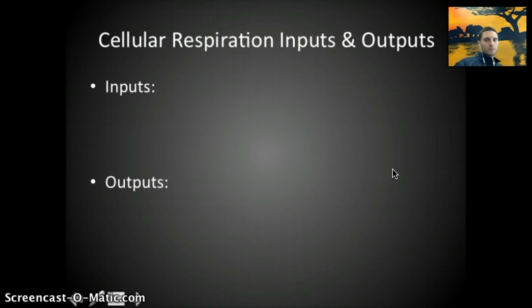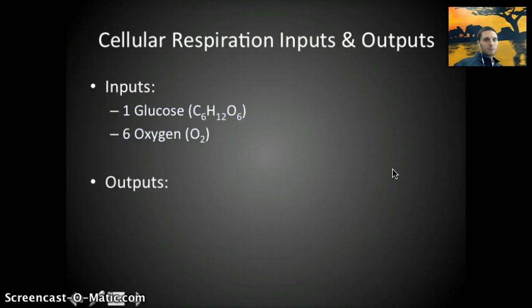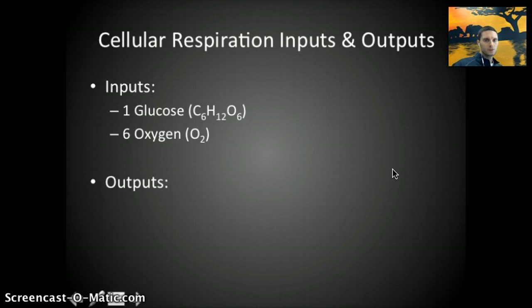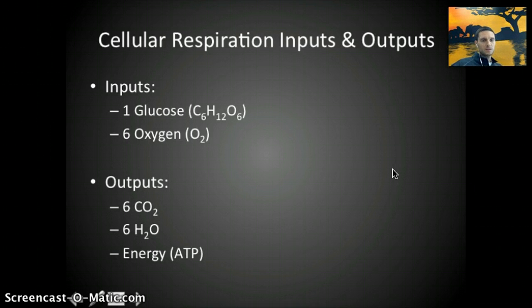Overall, for the process of cellular respiration, the inputs are one glucose molecule — C6H12O6 — and six oxygen molecules. This is why you need to breathe: you bring in oxygen that your cells and mitochondria need to convert glucose from food into ATP, the energy the body can use. The outputs of this process are CO2, which you breathe out, water, and a high yield of ATP.